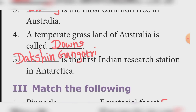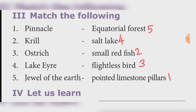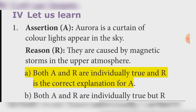Match the following. Pinnacle — Pointed limestone pillars. Krill — Small reddish fish. Ostrich — Flightless bird. Black-eye — Short leg. Jewel of the earth — Equatorial forest. Assertion-Reason: Aurora is a curtain of colored lights appearing in the sky; they are caused by magnetic storms in the upper atmosphere. Answer: Option A — Both A and R are individually true and R is the correct explanation for A.